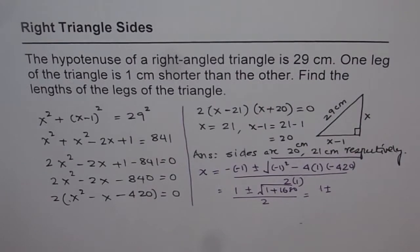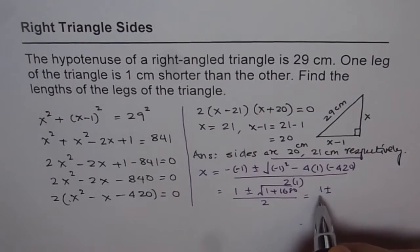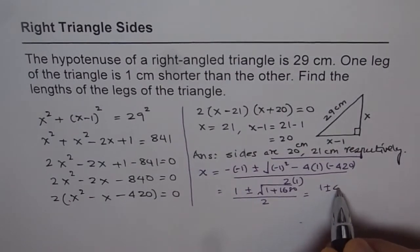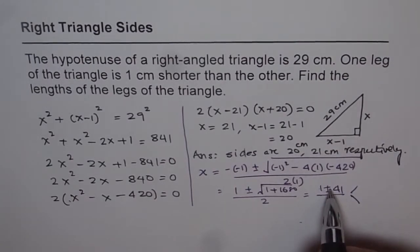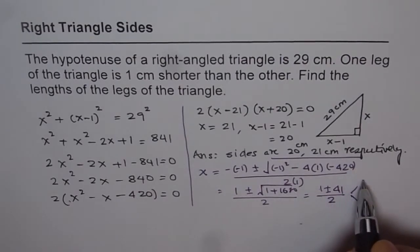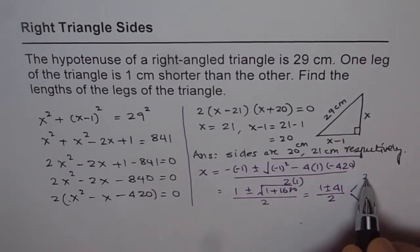Let's find square root of 1681. Square root of 1681 is equal to 41. So we get 1 plus minus 41 over 2 and that gives us two answers. One is, if I use the plus value, then we get 1 plus 41, which is 42. 42 divided by 2 is 21.